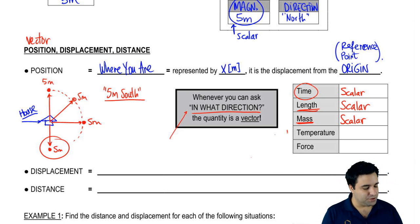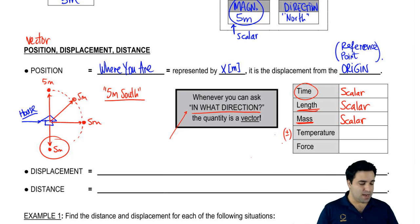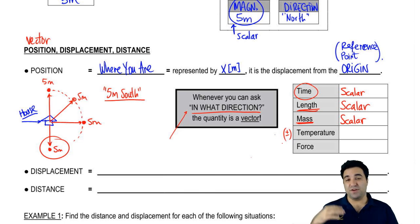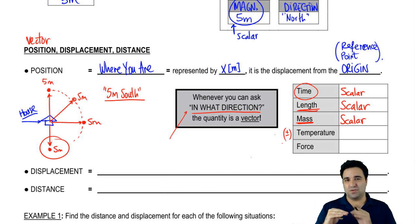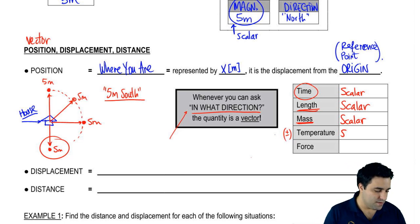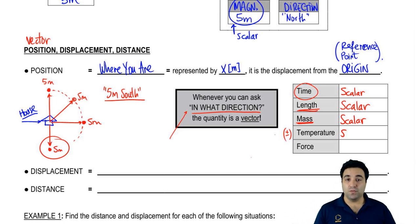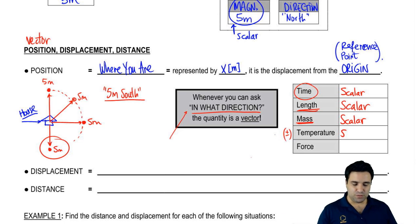Temperature is kind of tricky because temperature can be positive and negative. Positives and negatives in physics have to do with direction. However, in the case of temperature, the signs only have to do with whether you're above or below zero — and zero is just an arbitrary reference point. So temperature is also a scalar. Force, on the other hand, is a vector, because if you push a box with a force of 10, it makes a difference whether you push it to the left or to the right. So asking 'in what direction?' makes sense. That's the basic difference between the two.